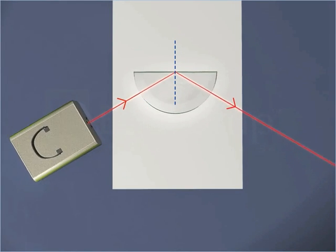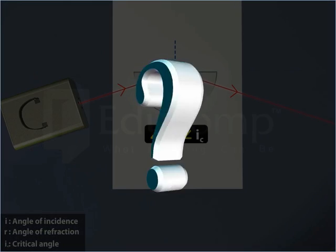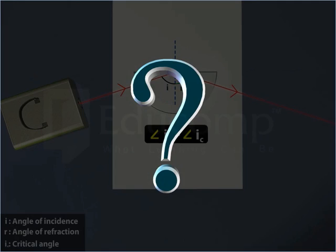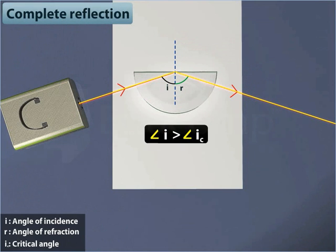Now increase the angle of incidence beyond the critical angle. What do you observe? The light ray does not refract but reflects back completely to the denser medium.